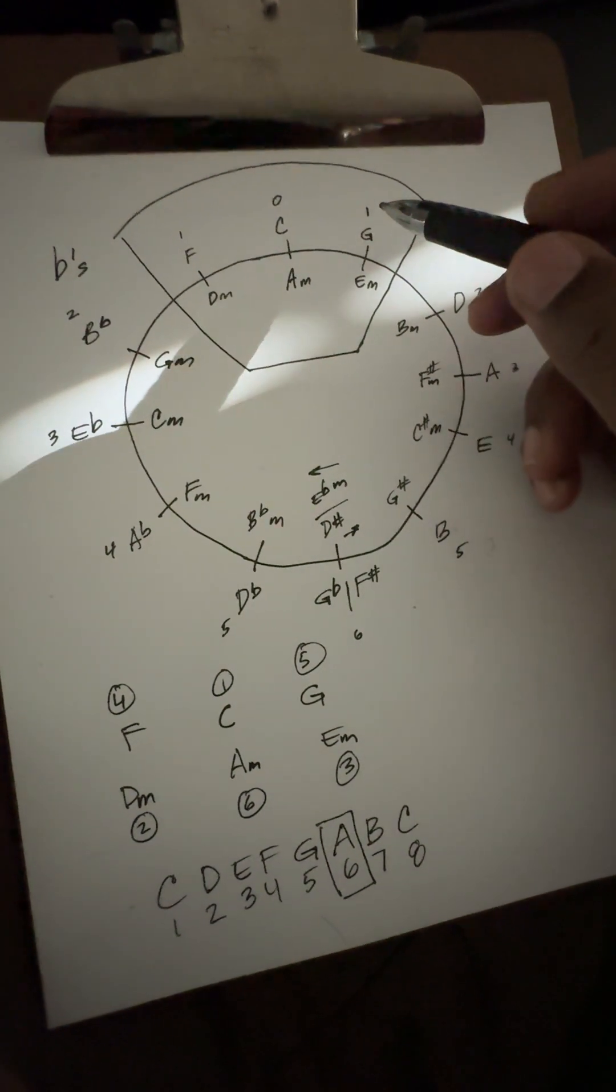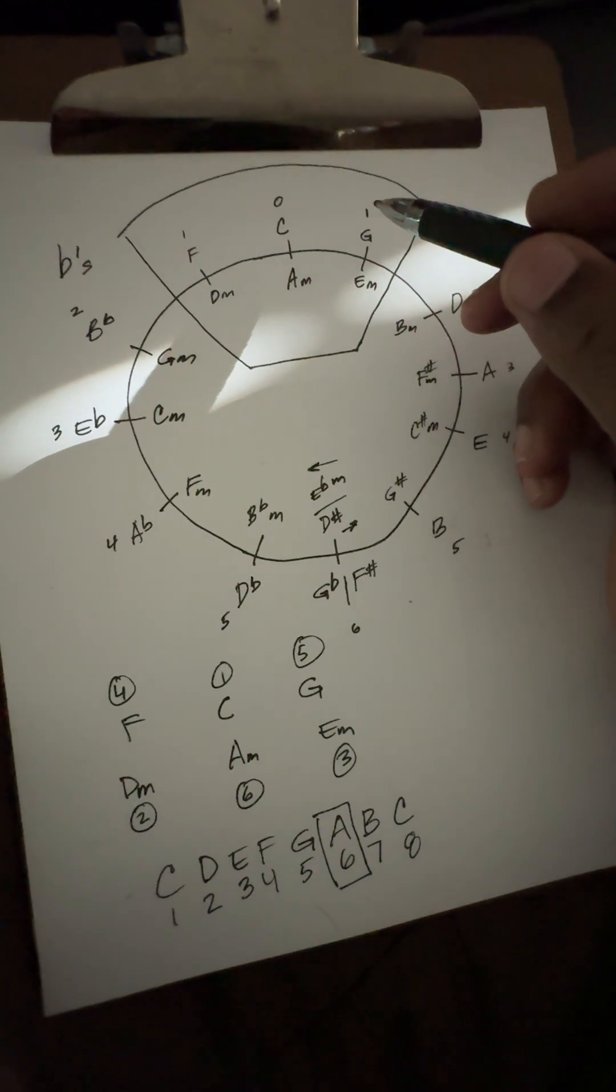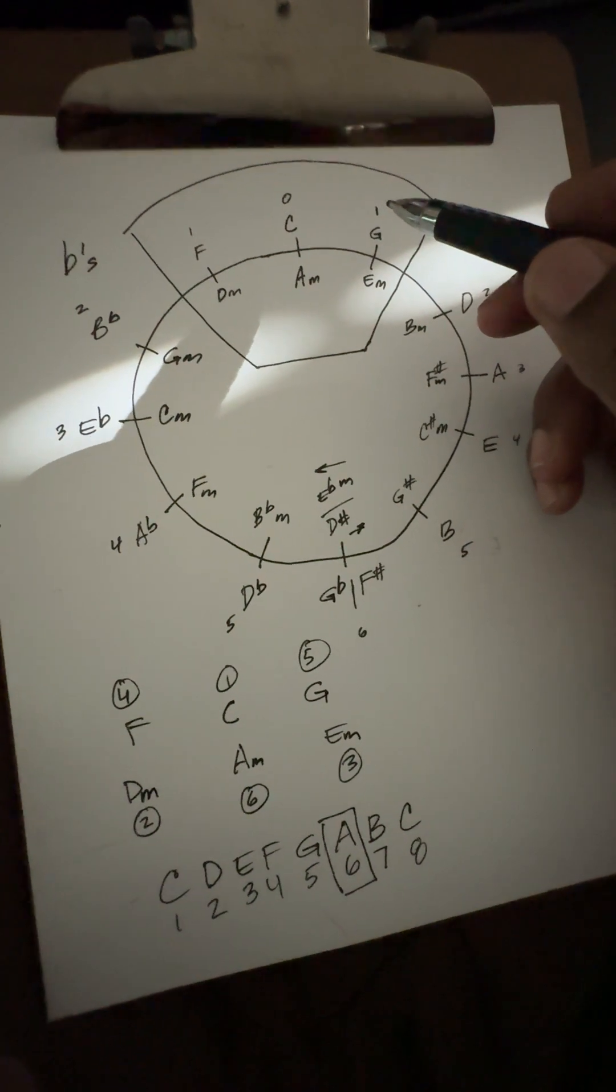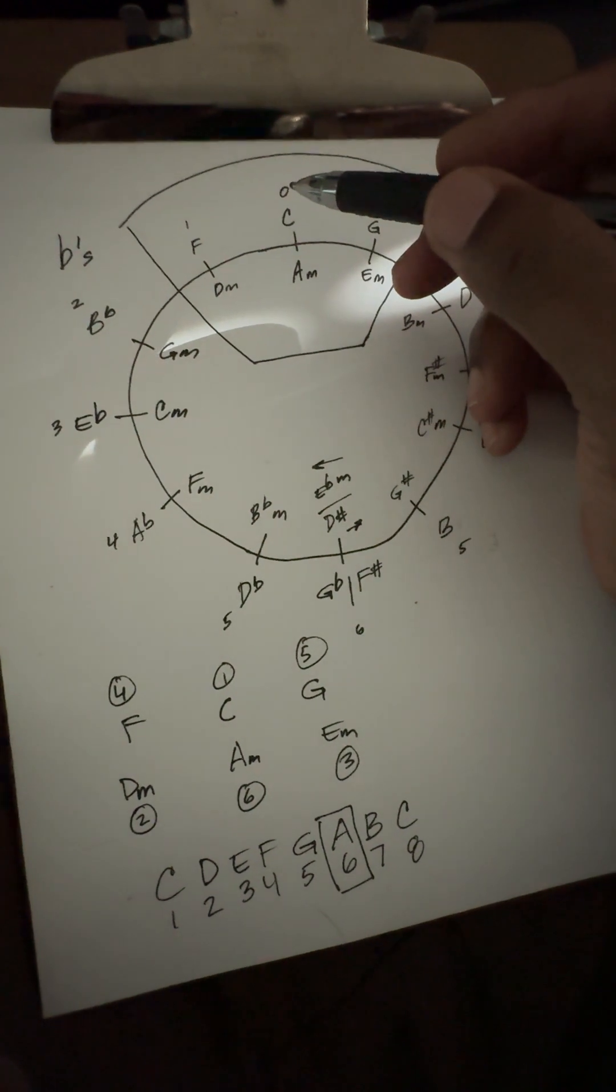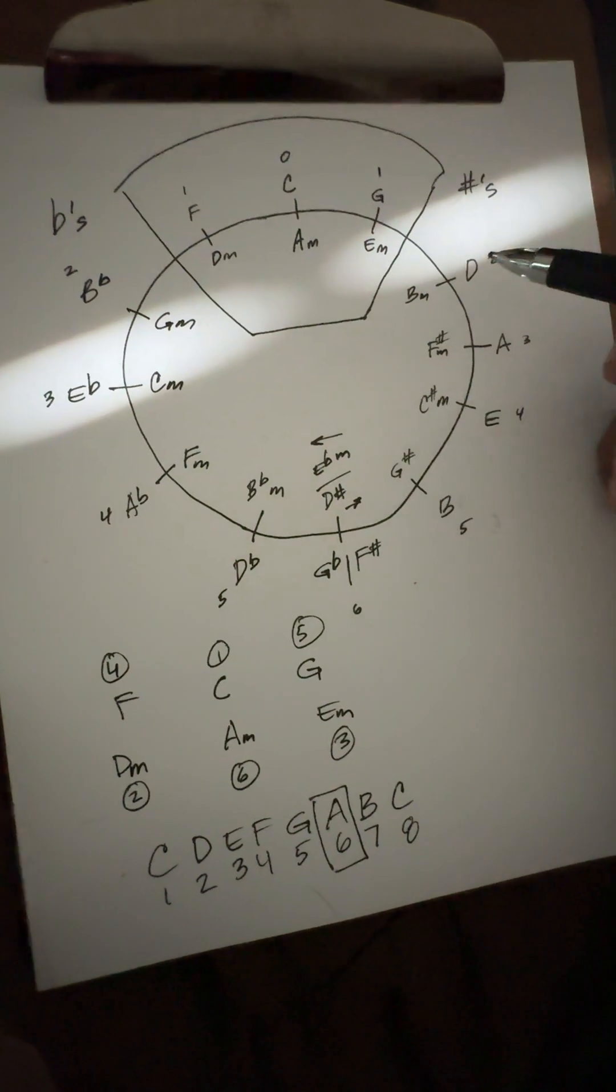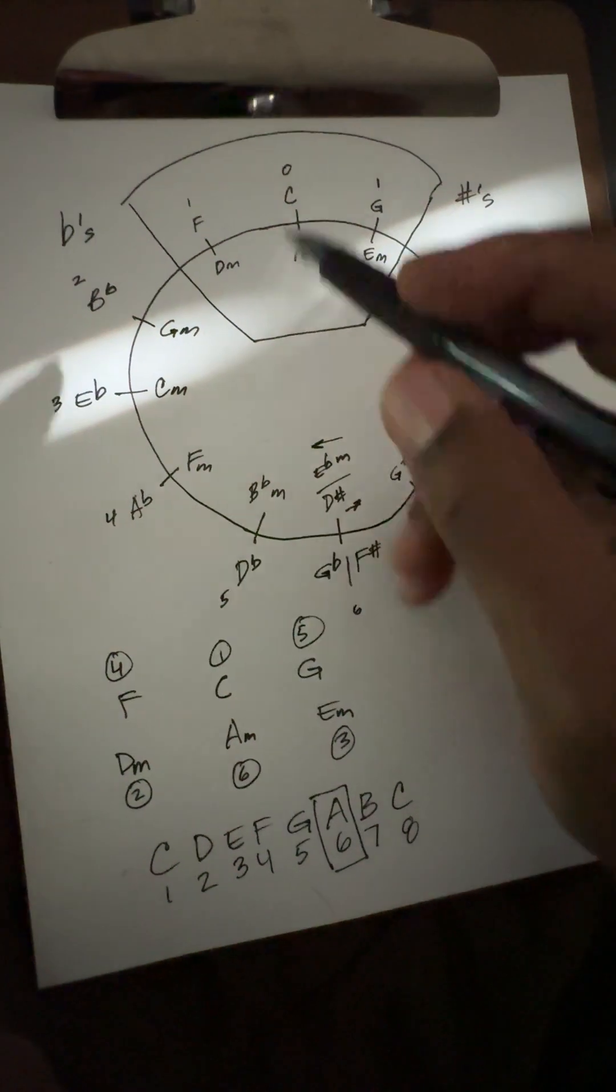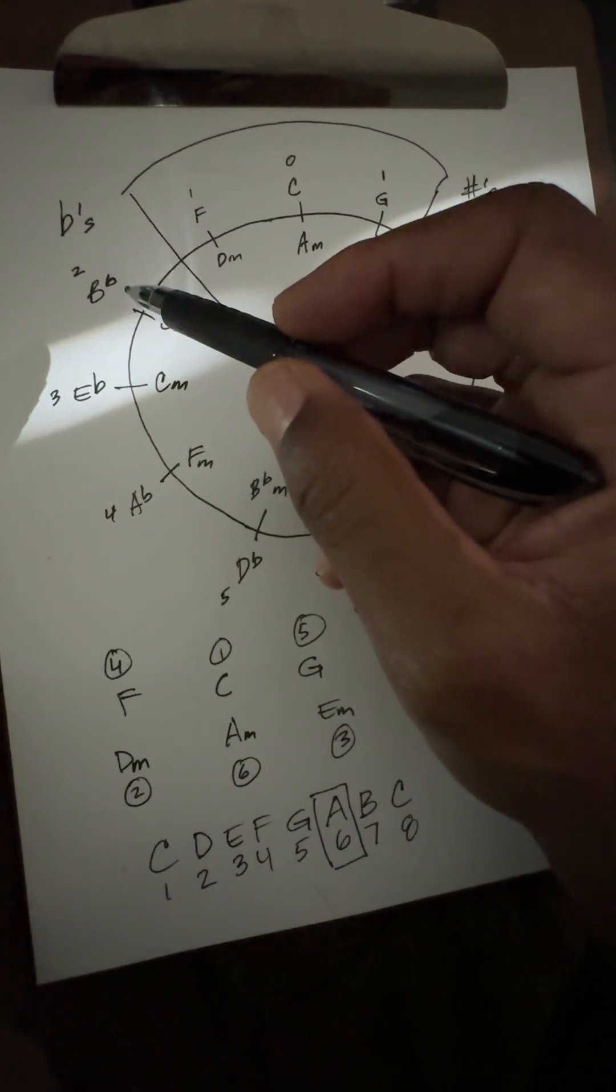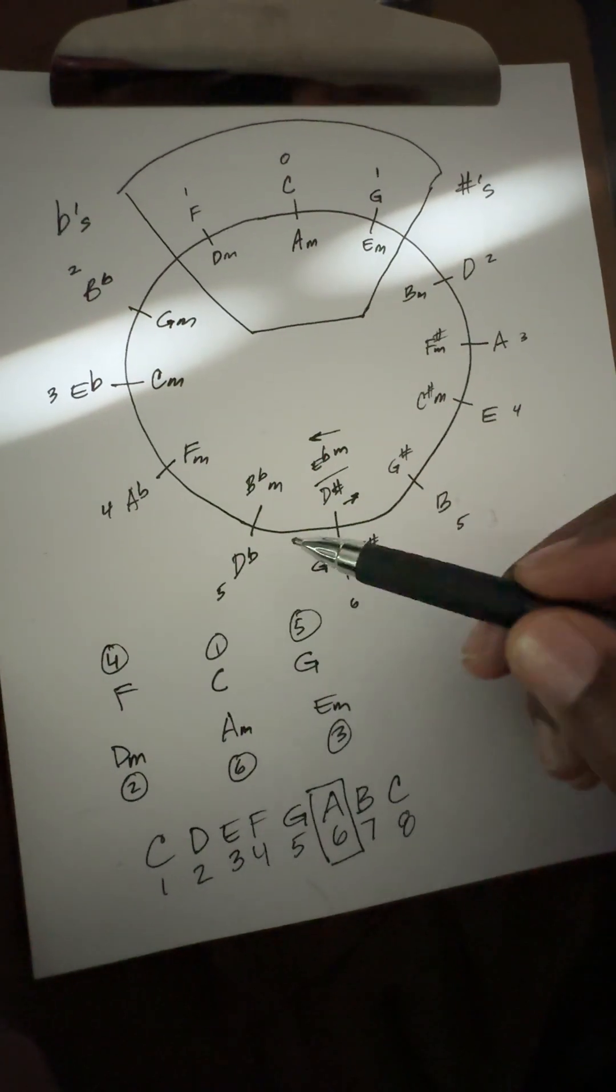So you can type out the actual sharps and flats in each key if you want to. But I just gave a numeric value. So there's no sharps or flats in the key of C. There is one sharp in the key of G. There is two in D, three, four, five, and six. In the key of F, there's one flat. B flat two, E flat three, A flat four, D flat five.